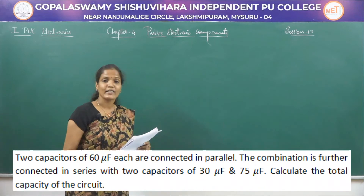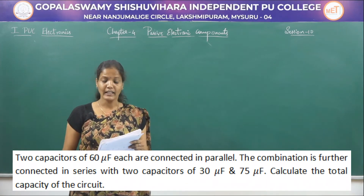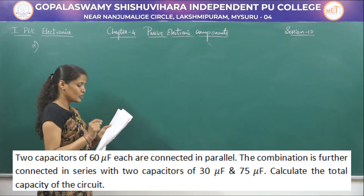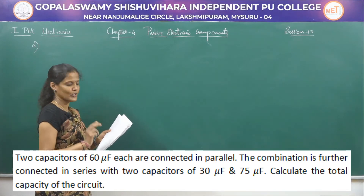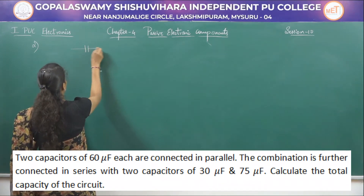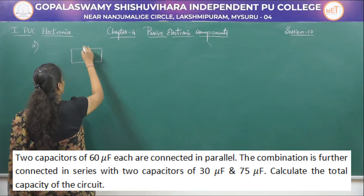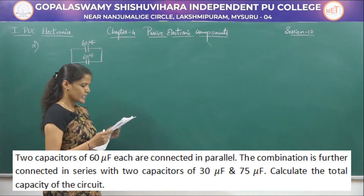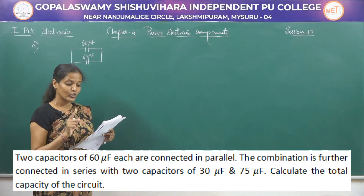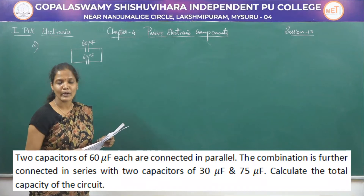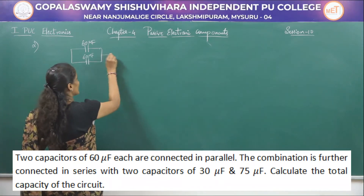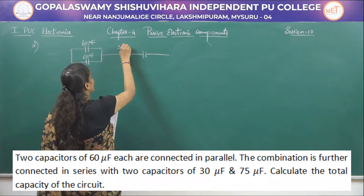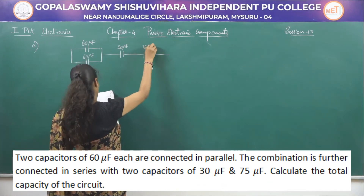The second problem: two capacitors of 60 microfarad each are connected in parallel. This parallel combination is further connected in series with two more capacitors of 30 microfarad and 75 microfarad. We need to calculate the total capacitance of the circuit.